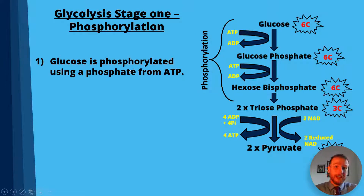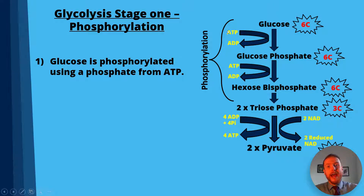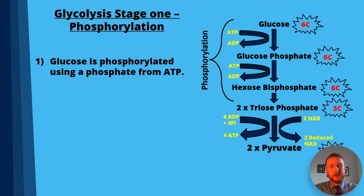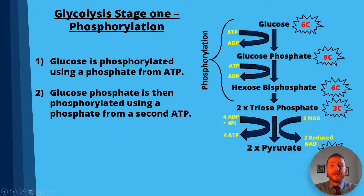So glucose is phosphorylated using a phosphate from ATP, which is converted into ADP. ATP stands for adenosine triphosphate — 'tri' means three, like a tricycle having three wheels, so triphosphate has three phosphates. It's then converted into adenosine diphosphate, where 'di' means two, so ADP has two phosphates, meaning it's lost a phosphate. Next, glucose phosphate is phosphorylated again using a phosphate from a second ATP.